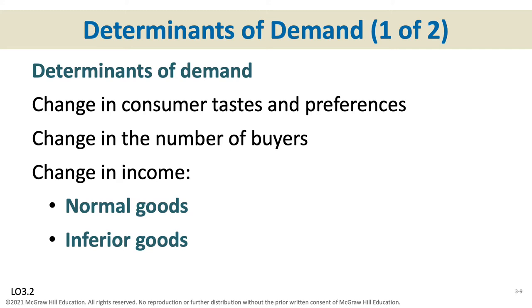On the flip side, if income goes down, then demand for inferior goods goes up because people suddenly can't afford better alternatives. If national incomes were going down, we'd all be eating more bologna or ramen noodles or spam.